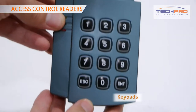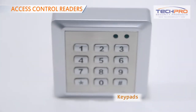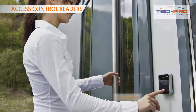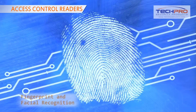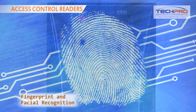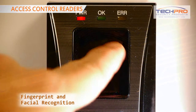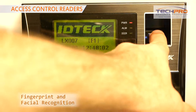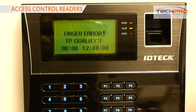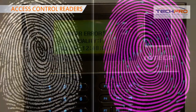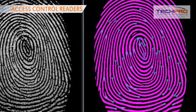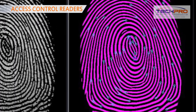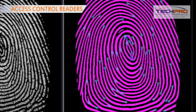Unlike proximity readers, keypads require the user to type an access code directly into the unit. Fingerprint and Facial Recognition Readers, also known as biometric readers, can recognize a user's fingerprint to determine appropriate access for that person. ID Tech's patented technology actually maps specific points of the user's finger for greater accuracy and security.